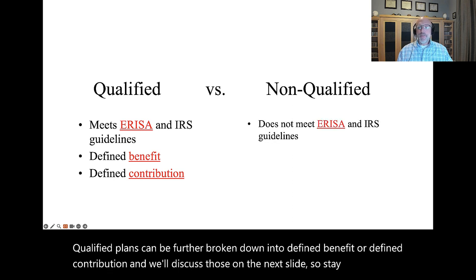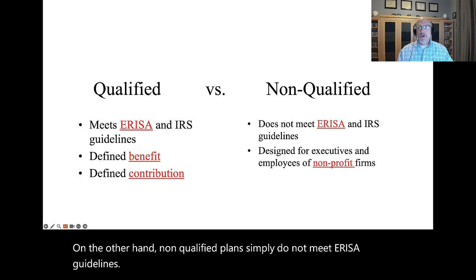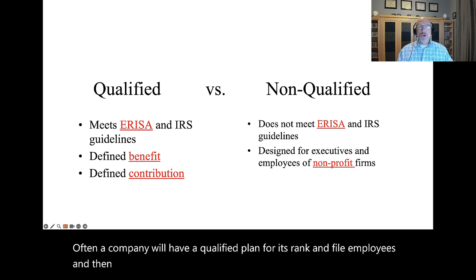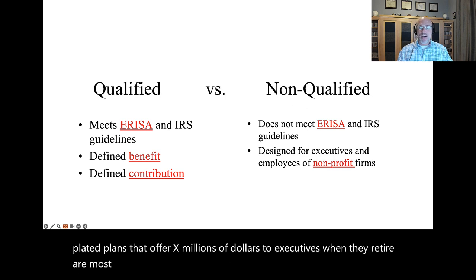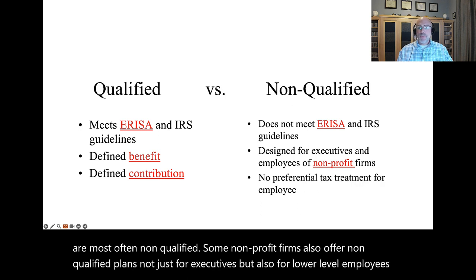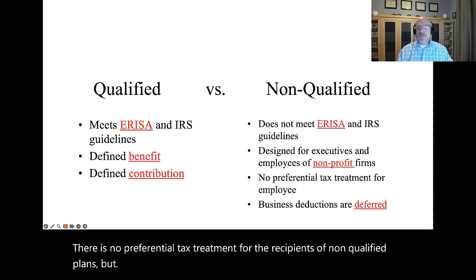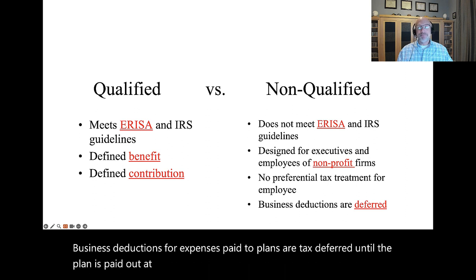Non-qualified plans simply do not meet ERISA guidelines. Often, a company will have a qualified plan for its rank-and-file employees and then offer so-called gold-plated plans for its executives. These gold-plated plans offering millions of dollars to executives upon retirement are most often non-qualified. Some non-profit firms also offer non-qualified plans not just for executives but for lower-level employees too. There is no preferential tax treatment for recipients of non-qualified plans, but business deductions for expenses paid to plans are tax-deferred until the plan is paid out, at which point the company must pay taxes on it.